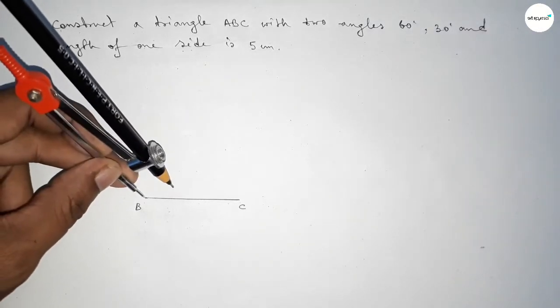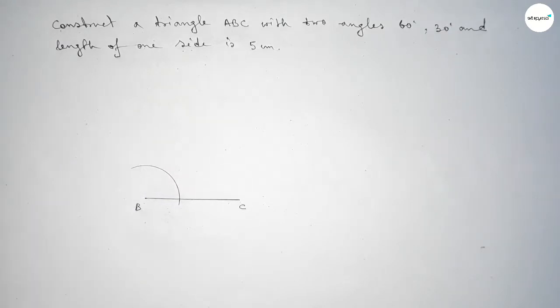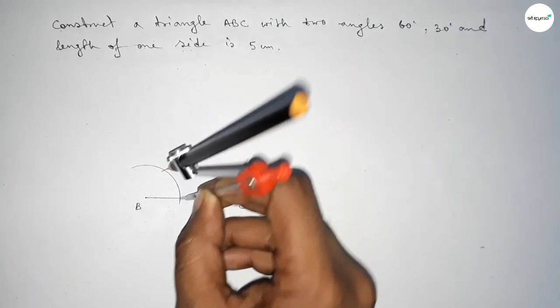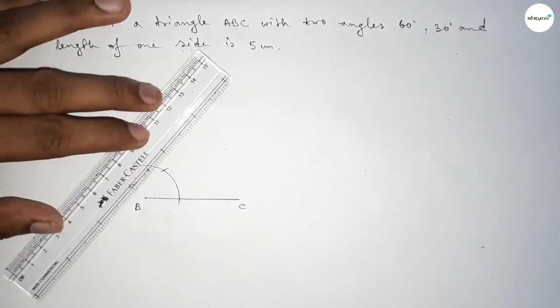Putting the compass here and drawing an arc by this way, and putting the compass here with same length and cut here. So both the curves intersect at a point. Now first joining this line to get here a 60 degree angle.